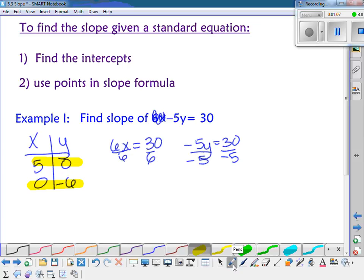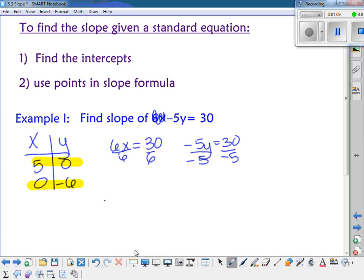So my slope is y minus y over x minus x. So I would have 0 minus negative 6 over 5 minus 0. And so minus a negative, it becomes a positive 6. 5 minus 0 is 5. So the slope of that line would be a positive 6 fifths. Any questions?